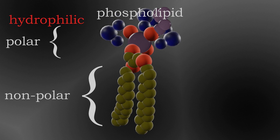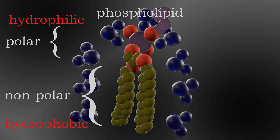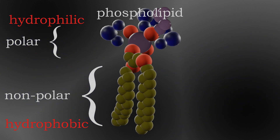Down here we have non-polar tails — two of them. These have many non-polar covalent bonds, so they are hydrophobic — water-fearing — and do not like to associate with water. However, they do like to associate with other non-polar things like fats and lipids. So typically when a molecule has both polar parts and non-polar parts, we call it amphipathic, meaning it has a polar side and a non-polar side.